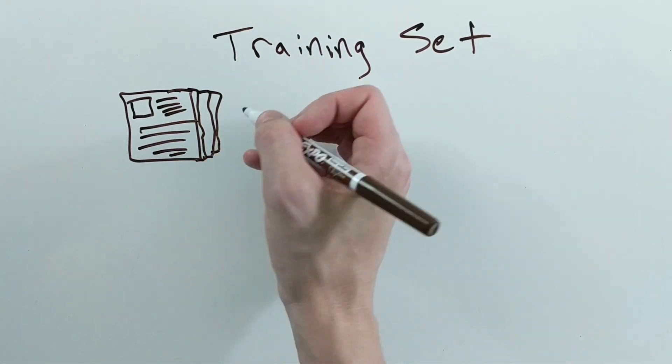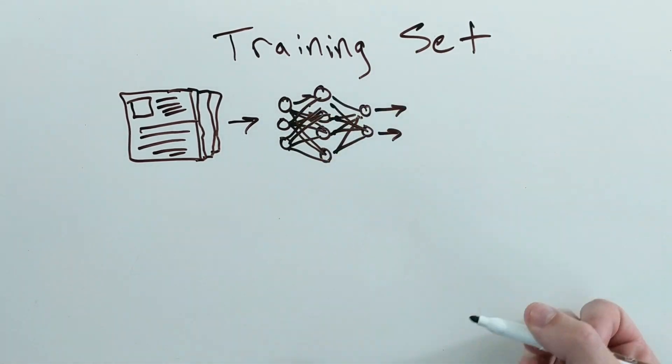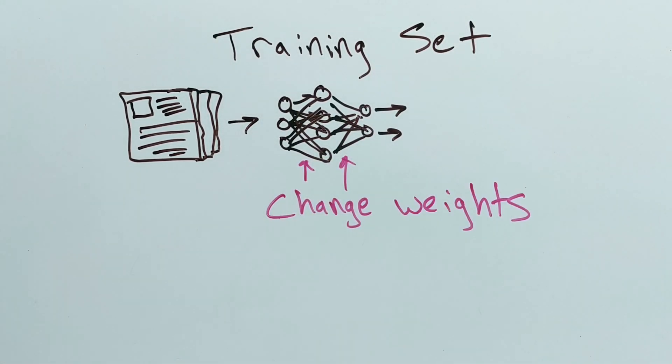The training set is the data you use to actually train or condition your model on. So if you were using a neural network, you would use the training set to adjust the weights of the neural network.